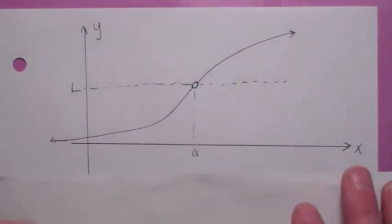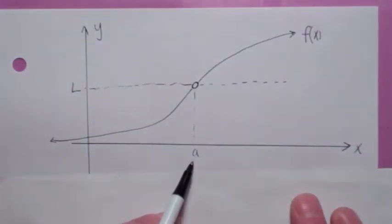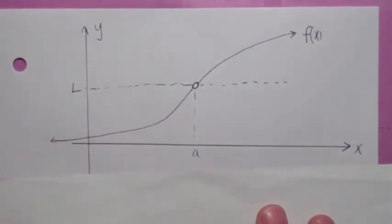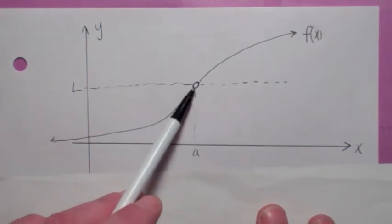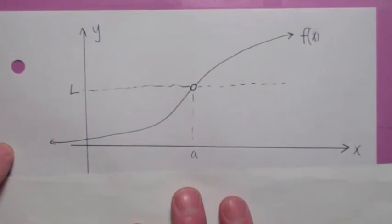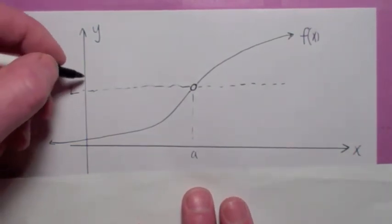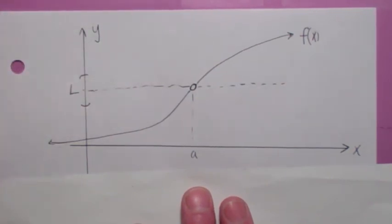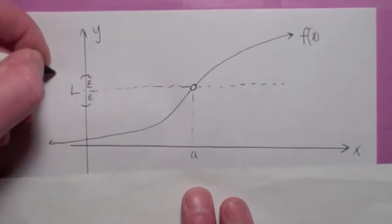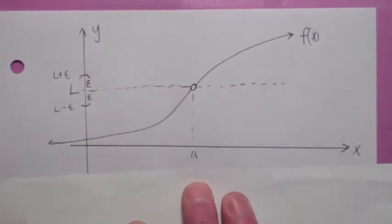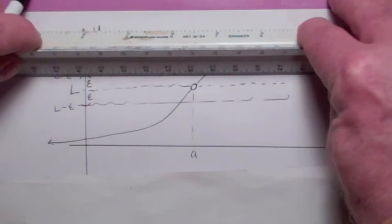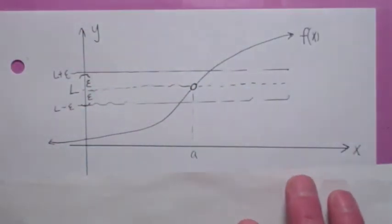Remember our working definition says: if we have a function f of x, the limit as x goes to a of f of x equals L means f of x can be made arbitrarily close to L by picking x sufficiently close to a. So suppose I pick some arbitrarily small band or interval around L. Let's call the radius of that interval epsilon. So this would be L plus epsilon, this would be L minus epsilon. No matter how small that band is around L, think of this as an allowable error band. You have to be able to make all the f of x values in that band by picking x sufficiently close to a.